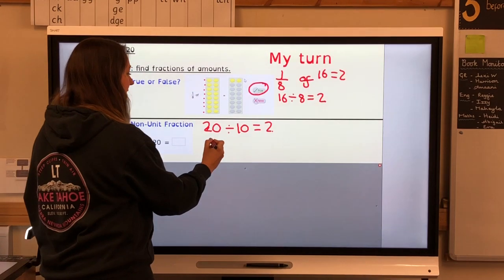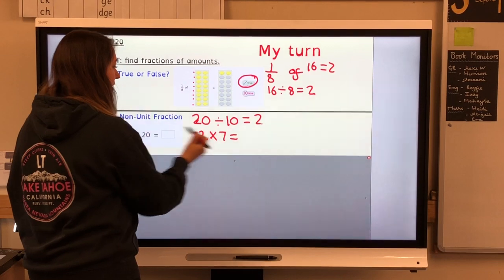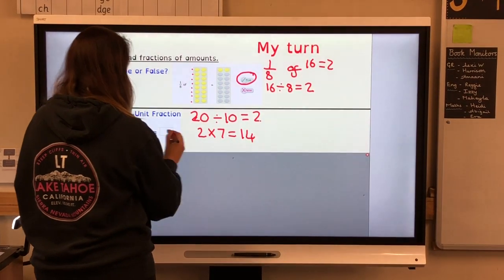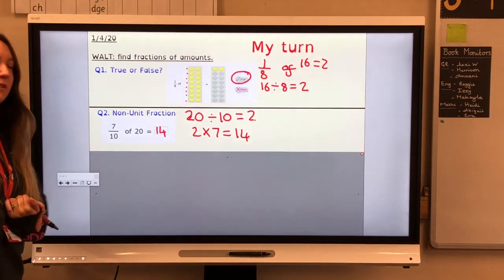2 times 7 equals 14. So seven-tenths of 20 equals 14.